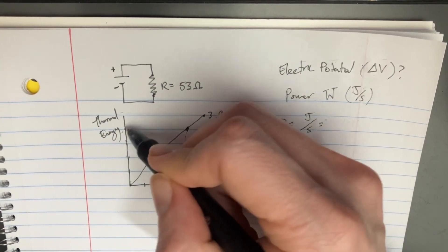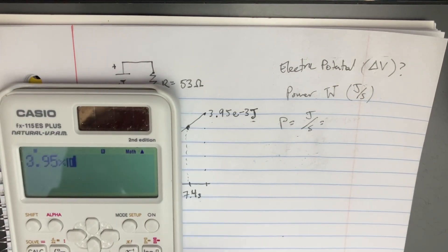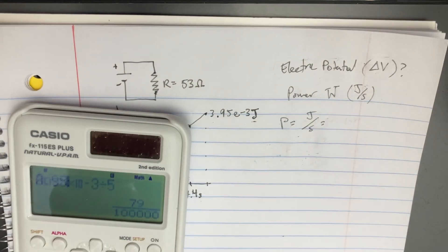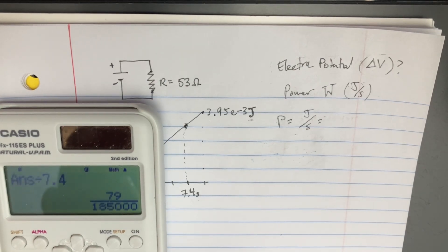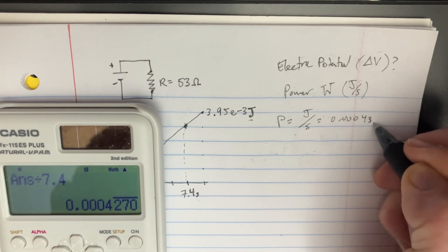Let's take our 1, 2, 3, 4, 5 notches, and we'll take 3.95 e to the negative 3, divide that by 5, and then this is going to meet up at the 4th notch. We're just going to multiply that by 4, divide it by 7.4 seconds, and we get what power is, about 0.00043.